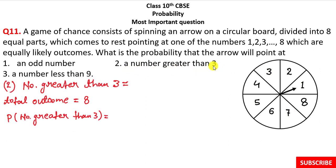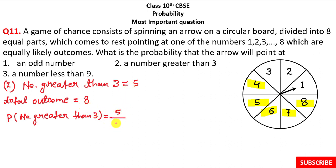The second part: find the probability of a number greater than 3. We check how many numbers are greater than 3 — those are 4, 5, 6, 7, and 8, giving us 5 numbers. The favorable outcomes are 5 and the total outcomes are 8. Therefore, the probability of a number greater than 3 equals 5 upon 8, which is the correct answer for the second part.